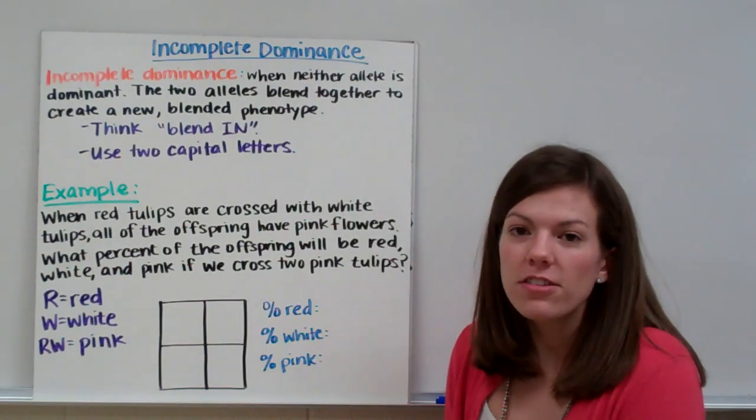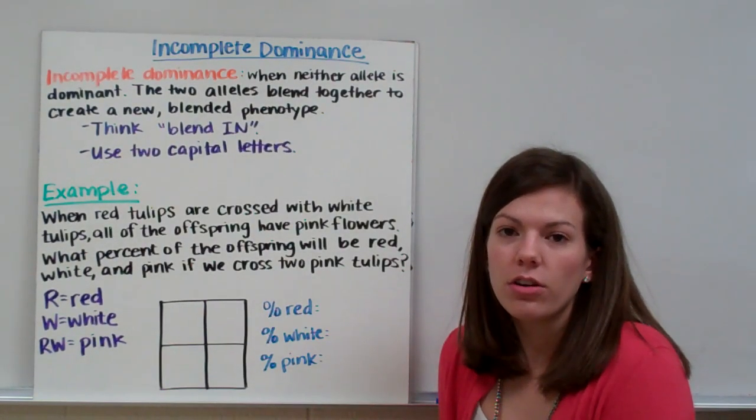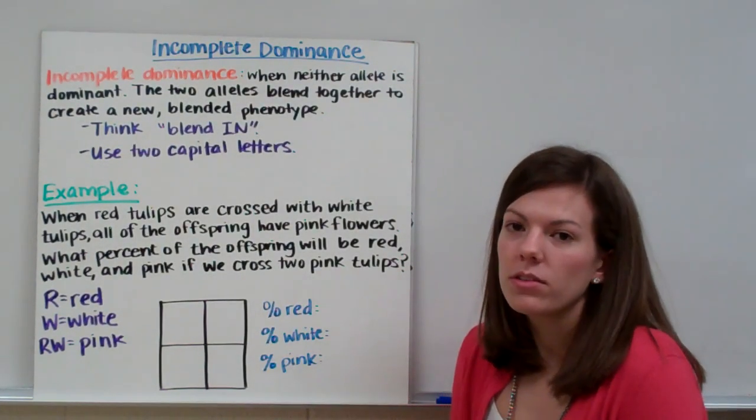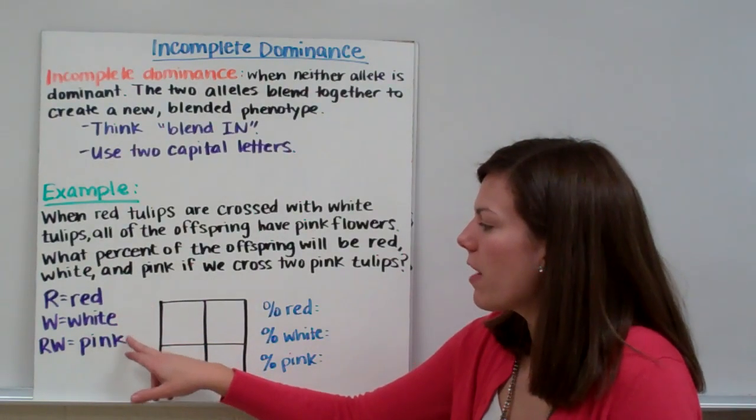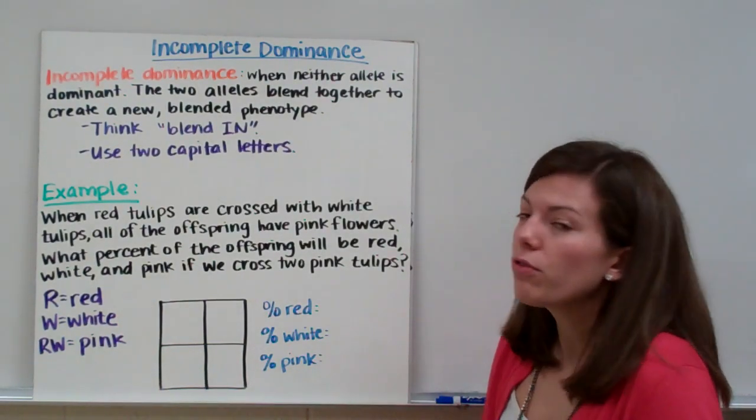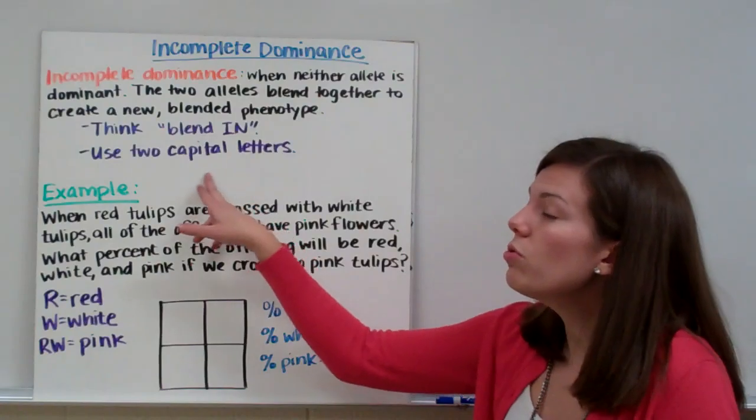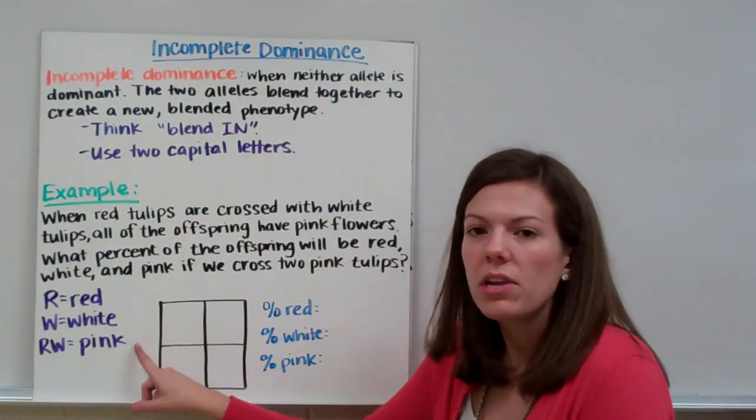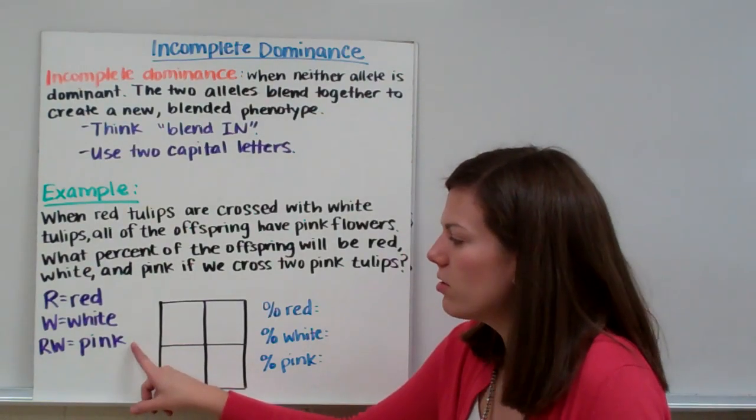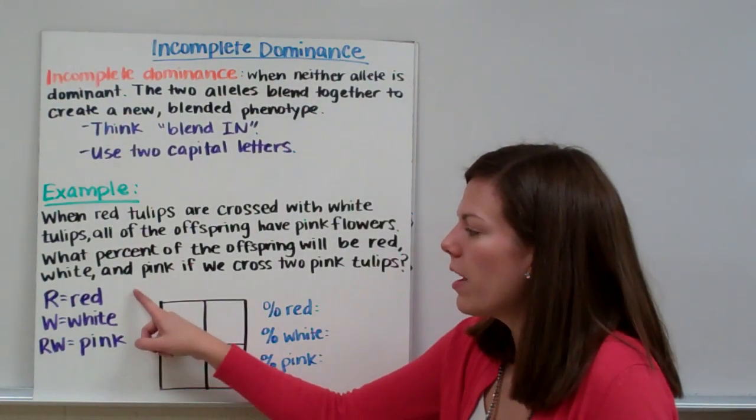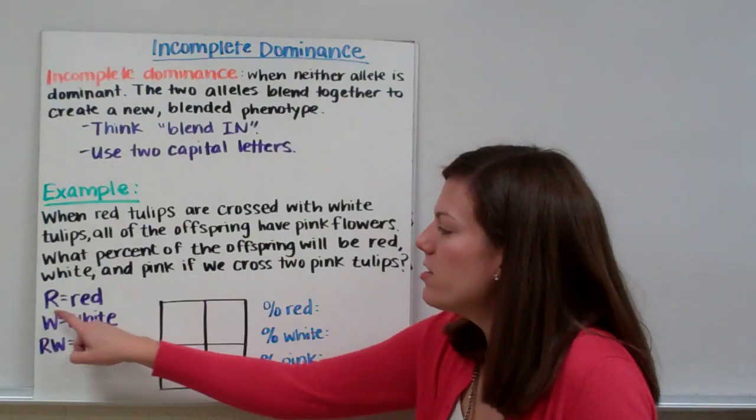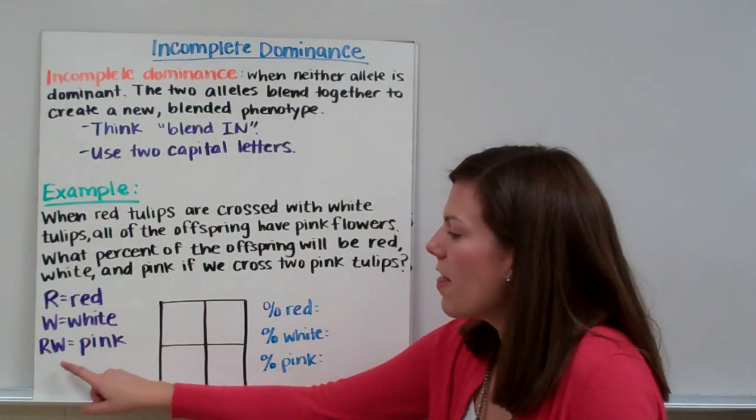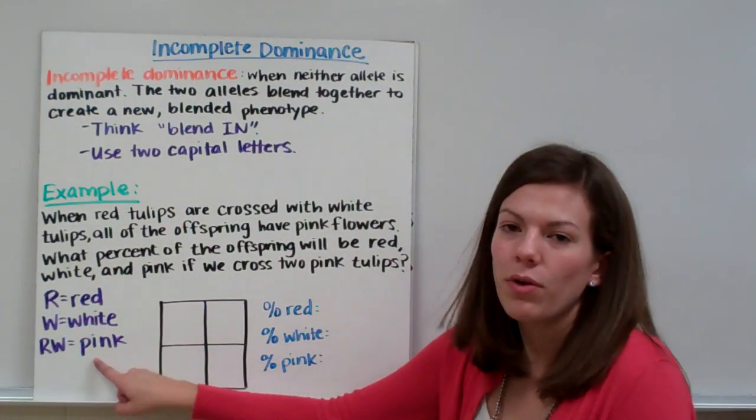The first thing you need to do is assign your different traits with an allele. We have red flowers, white flowers, and pink flowers. For incomplete dominance, we only use two different capital letters. We have red and white - they blend together to make pink. So we don't need a P for pink, we just use the two letters for red and white mixed together. Red is R, white is W, and we use R and W for pink.